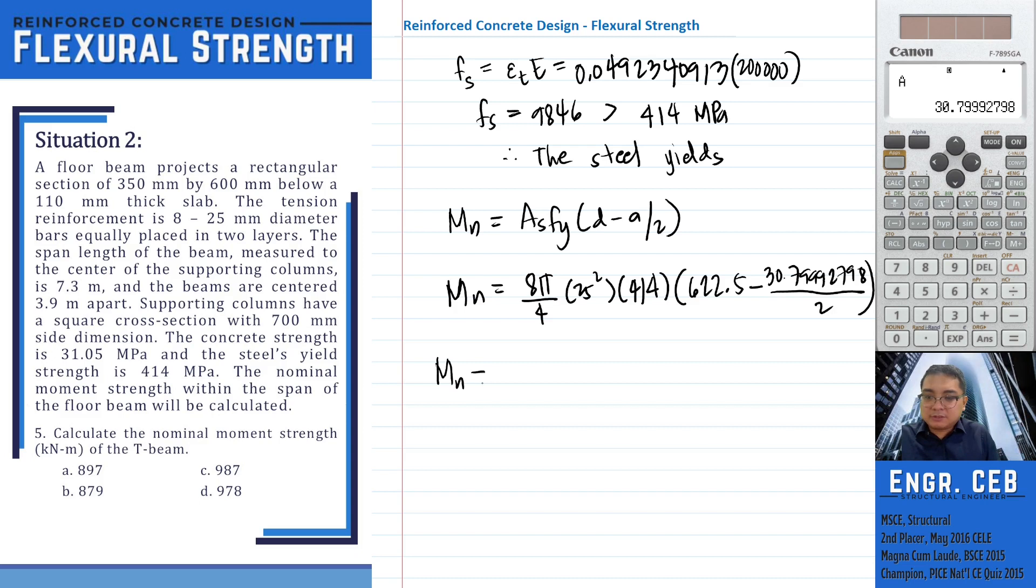The value of a is 30.7992798 divided by 2. The nominal moment strength is 987,007,574.3 Newton-millimeters. Dividing by 1000 squared, we obtain 987.007574743 kilonewton-meters. That is letter C.